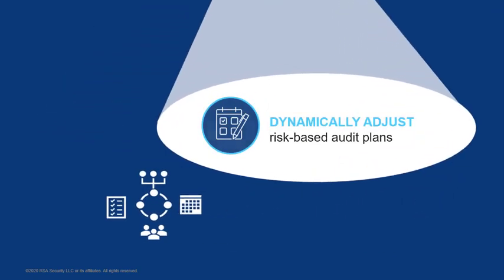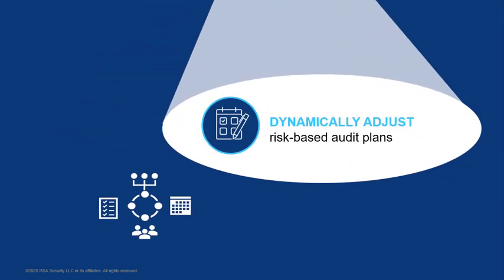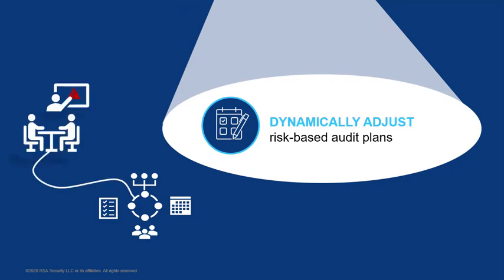Archer Audit Management can enable you to dynamically adjust audit plans and incorporate a risk-based approach. With Archer, you can collaborate with risk and compliance business partners to share operational risk and control data, and then align audit plans and prioritize efforts based on your business priorities and latest assessment of operational risk.